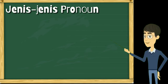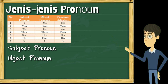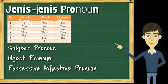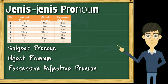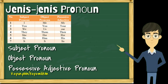Ada banyak jenis pronoun di dalam bahasa Inggris. Tapi yang akan kita pelajari pada video ini adalah subject pronoun, object pronoun, dan possessive adjective pronoun. Tiga pronoun ini mempunyai fungsi dan penggunaan yang berbeda. Secara ringkasnya, subject itu posisinya sebagai subject di dalam sebuah kalimat, object itu sebagai object, dan possessive itu menyatakan kepunyaan atau kepemilikan.